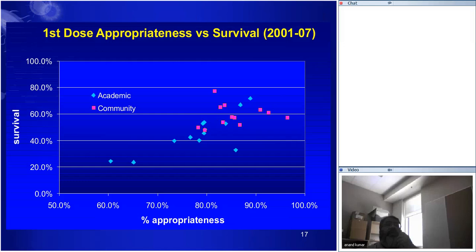Does it relate to outcome on an institutional basis? Absolutely. Survival to hospital discharge correlates directly with percent appropriateness across institutions. Generally speaking, our community hospitals have higher numbers than do our academic places, presumably because we get more resistant bugs at academic centres.